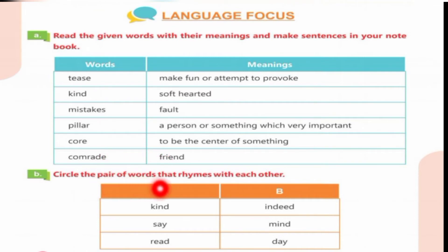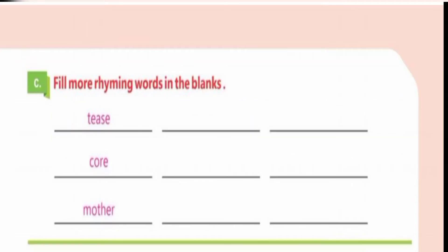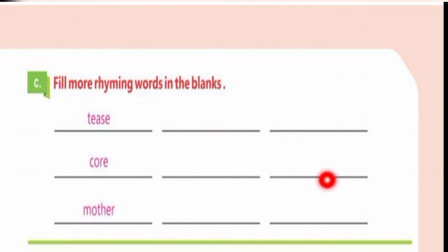Circle the pair of words that rhyme with each other: kind, mind — say, day — read, indeed. Fill more rhyming words in the blank: teas, cheese, peas — core, more, door — mother, other, brother.